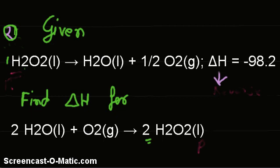The first step is to study both these equations discreetly, and you'll find some similarities. Here, the H2O2 is in the reactant, and here H2O2 is in the products. Similarly, you find that there is one molecule of H2O2 here, and here there are two.